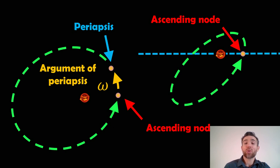Before we do that, we need to understand things like the ascending node, the periapsis, and also orbit inclination as well.